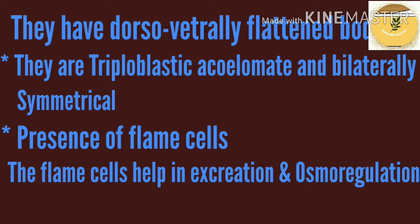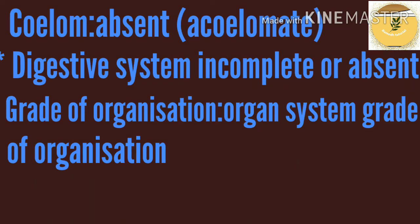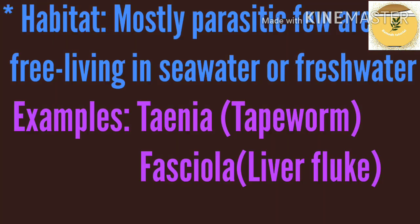Presence of flame cells. The flame cell helps in excretion and osmoregulation. Coelom is absent — they are acoelomate. Digestive system is incomplete or absent. Habitat is mostly parasitic; few are free living in seawater or freshwater.